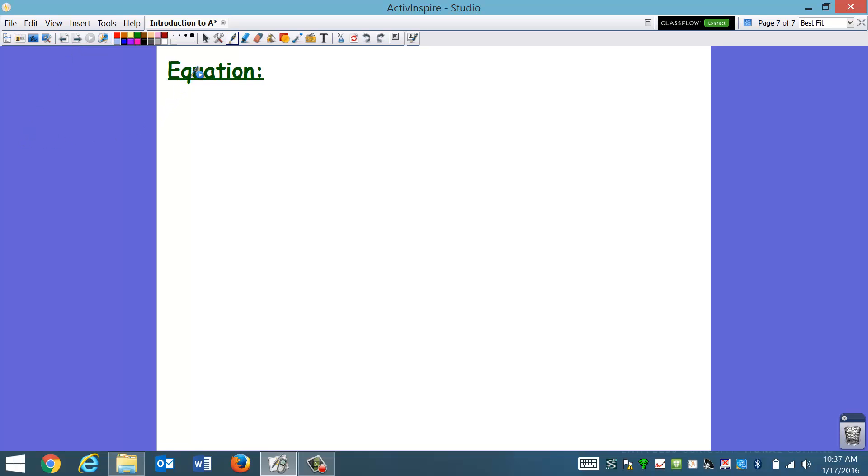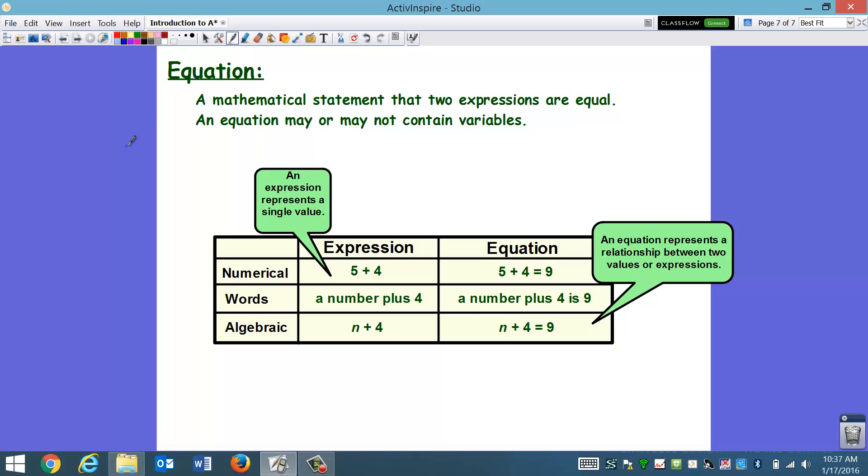And lastly, let's talk about an equation. What is an equation? An equation is a mathematical statement that two expressions are equal. An equation may or may not contain variables. I kind of think of an equation as a sentence, a complete sentence. It tells you everything you need to know. I think of an expression as like a sentence fragment. It only tells you part of the story. It doesn't tell you the whole thing. So take a look at this table. It might be a good idea to write the table down in your notes. But we're going to compare expressions and equations. We'll start with numerical. We call it a numerical expression or a numerical equation because there's only numbers. There are no variables. So an example of the expression would be 5 plus 4. It just tells you part of the story. But if you move on to equation, it gives you the whole story because it tells you what it equals. 5 plus 4 equals 9.